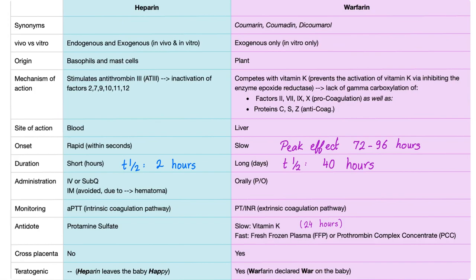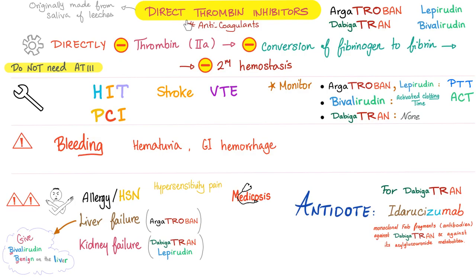We've discussed heparin and warfarin before, so please go back and watch those videos. Now it's time for direct thrombin inhibitors. If you've watched my earlier video on HIT — heparin-induced thrombocytopenia — we treat HIT by stopping the heparin and using argatroban or lepirudin. These are direct thrombin inhibitors. The drugs are: argatroban, dabigatran, lepirudin, bivalirudin. Why 'troban'? Because it's a thrombin inhibitor — thrombin ban.